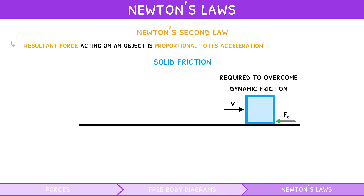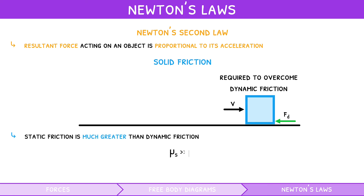Typically, questions about this ask for the relationship between static and dynamic friction, or their coefficients. The relationship is that static friction is much greater than dynamic friction, and the same relationship applies to their coefficients. If a question states that a surface is smooth, it means that the surface does not exert friction on the object.